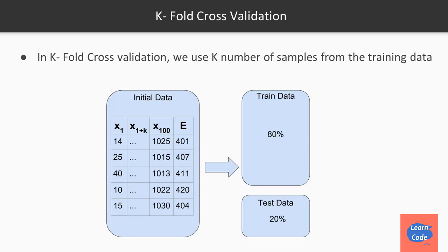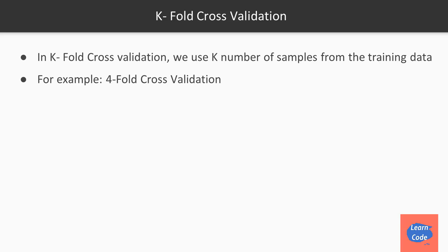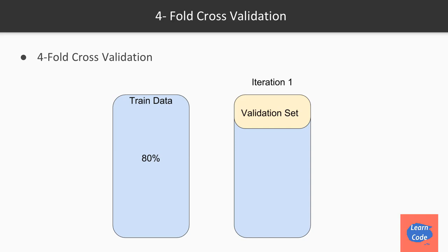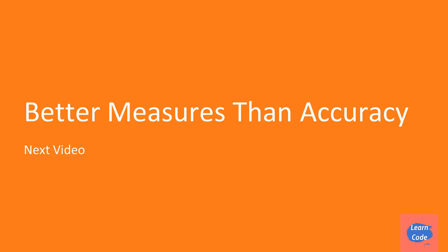The validation set can be 20% of the remaining training data, or we can use k-fold cross validation. In k-fold cross validation, we use k number of samples from the training data. We split data into train and test sets, then further split the training data into k parts. For four-fold cross validation, training data is split into four parts — the first part is taken as validation and the rest as training data. In the next step, we take a new validation set and the remaining parts become training data. We keep moving the validation set, taking different parts as training data each time, allowing us to use the entire training data while still getting a good estimate from the validation set.